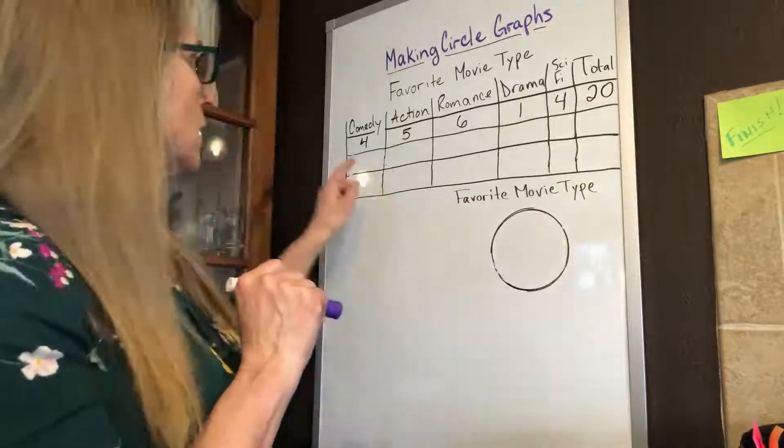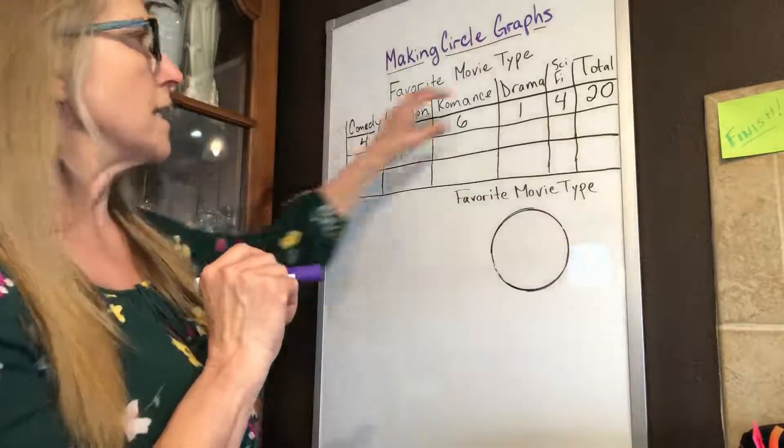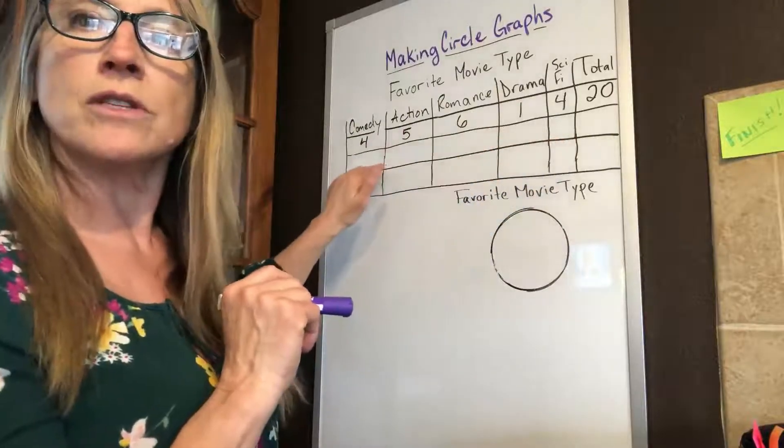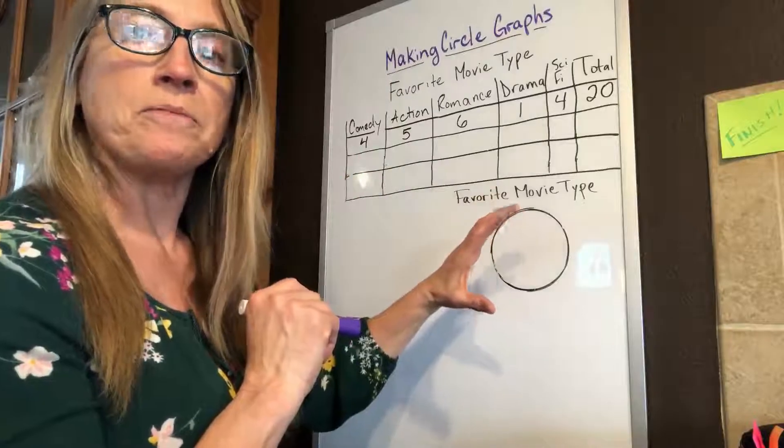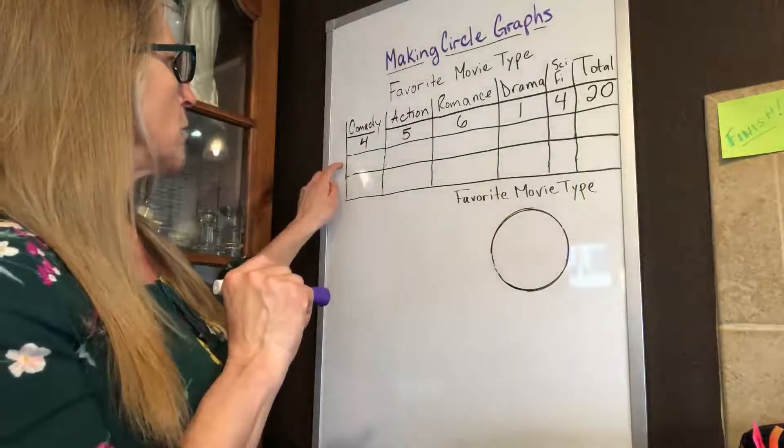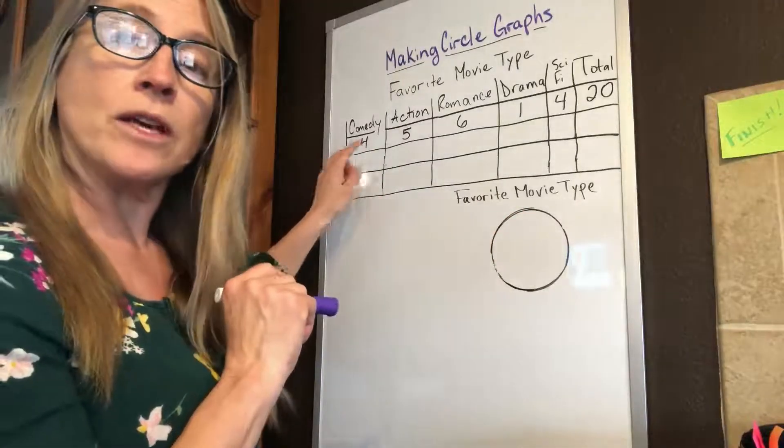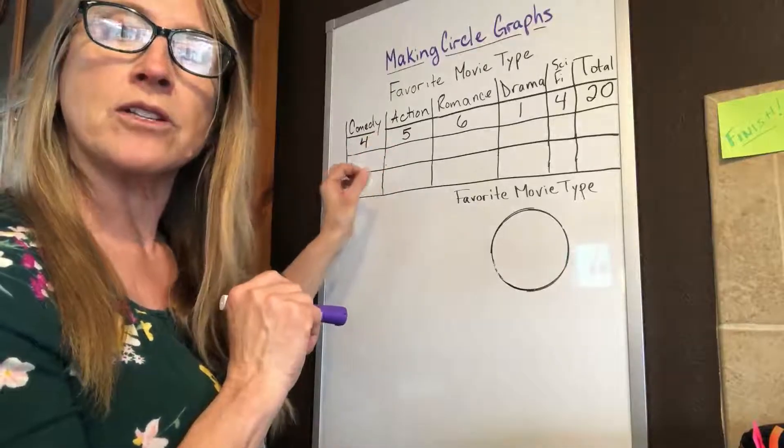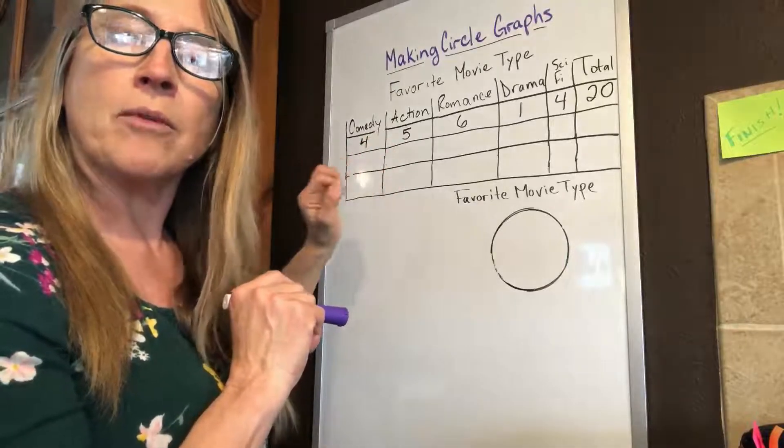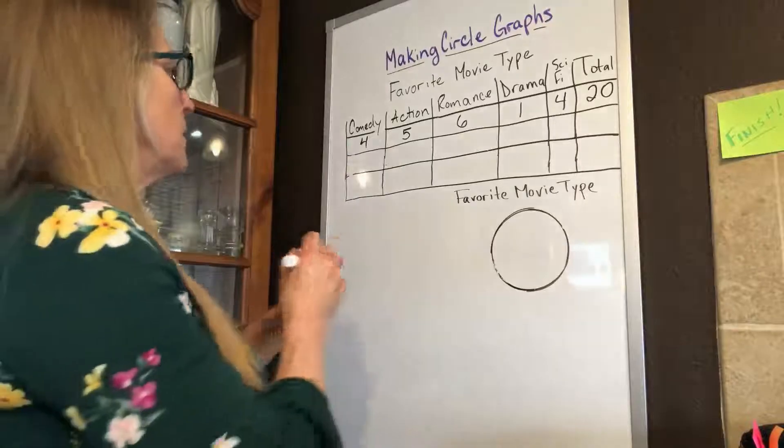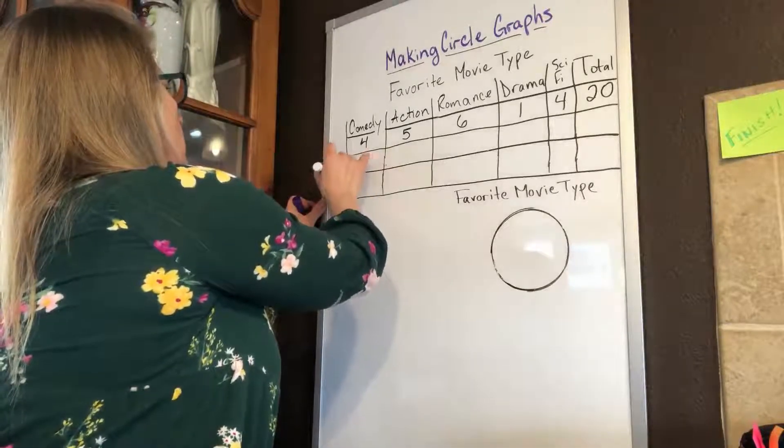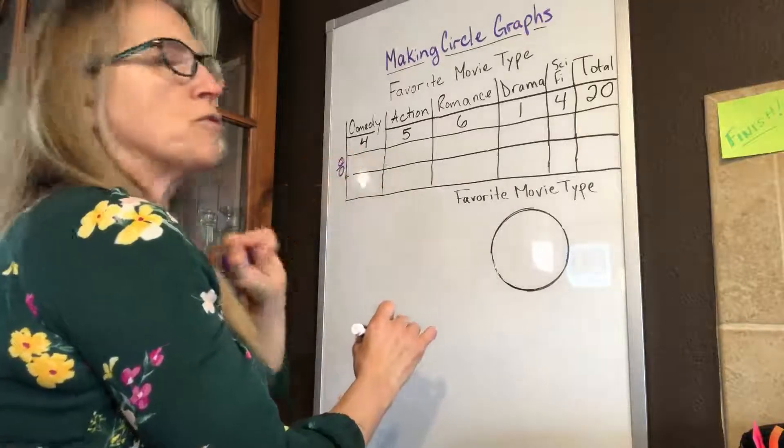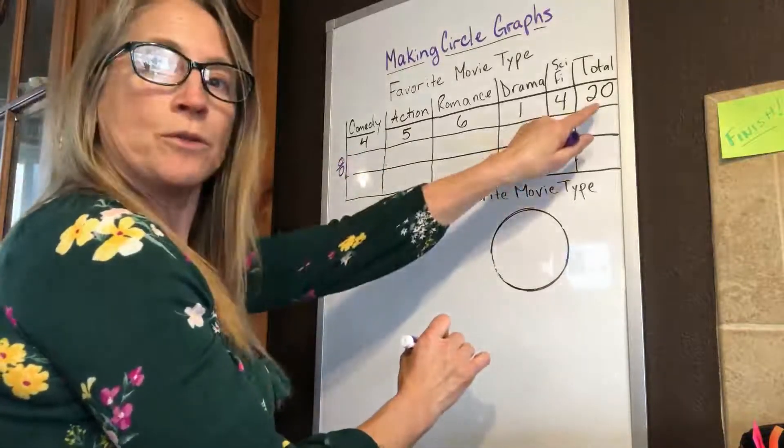The first thing we need to do - I've got the data table, but I've added some extra rows, and these rows will help us do our calculations so that we can complete our circle graph. The first row is where I'm going to put percentages for each category. What percentage of the whole is that number? I'm going to find out what percentage four is of our total of 20.